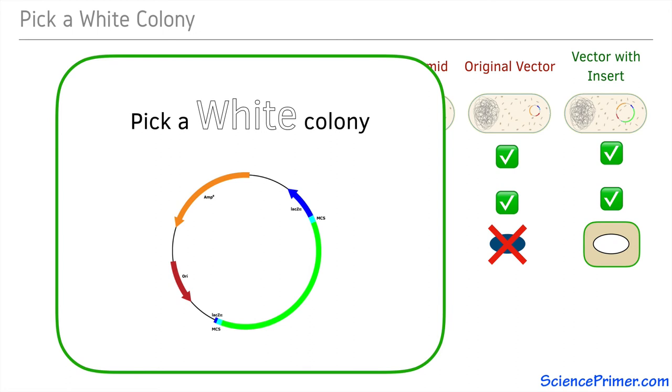We know these cells have a plasmid because they have resistance to ampicillin, and that the plasmid has an insert inside the LAC-Z gene because the cells are not able to break down X-gal.